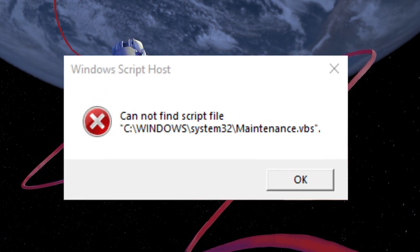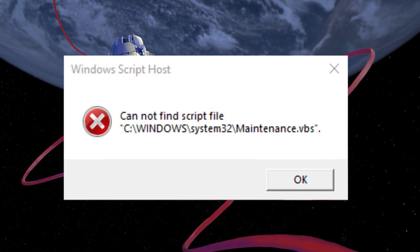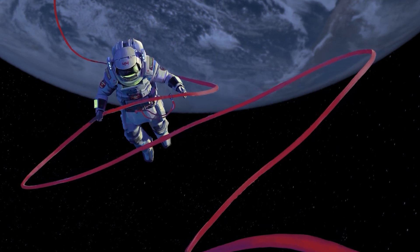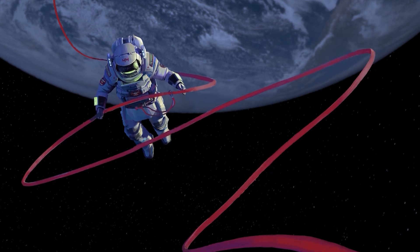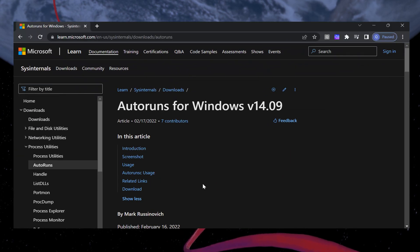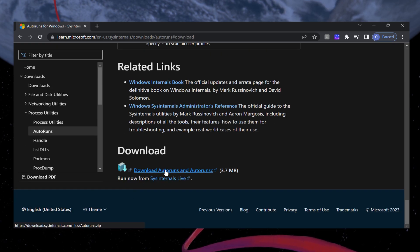Windows users often encounter the Windows Script Host Error Cannot Find Script File. This error message can be frustrating, but fear not, I am here to guide you through some effective methods to fix it. The first method involves using the Autorun Utility to check the VBS integrity.